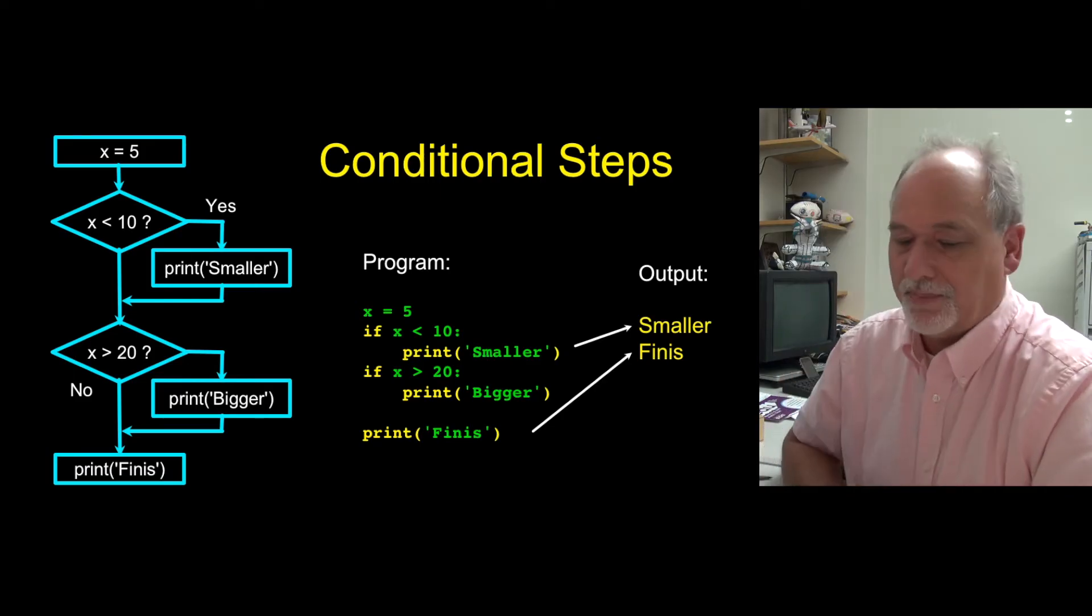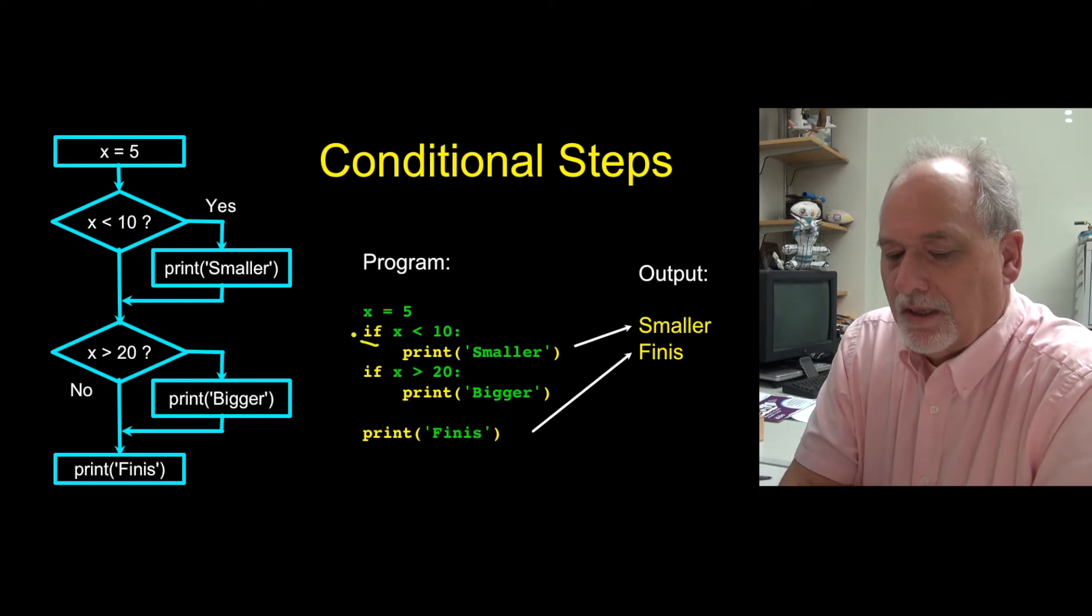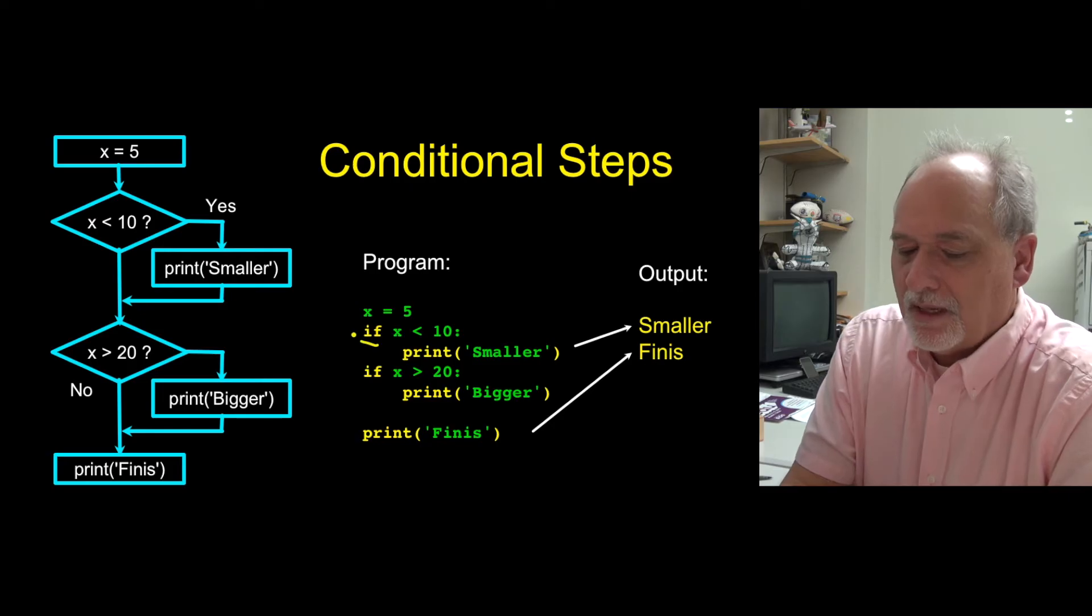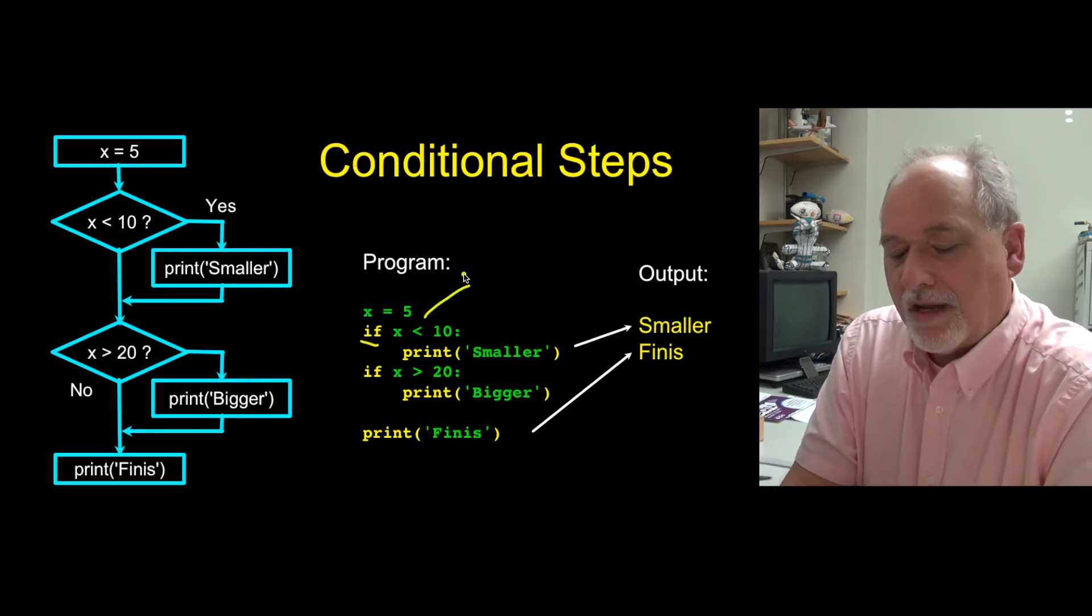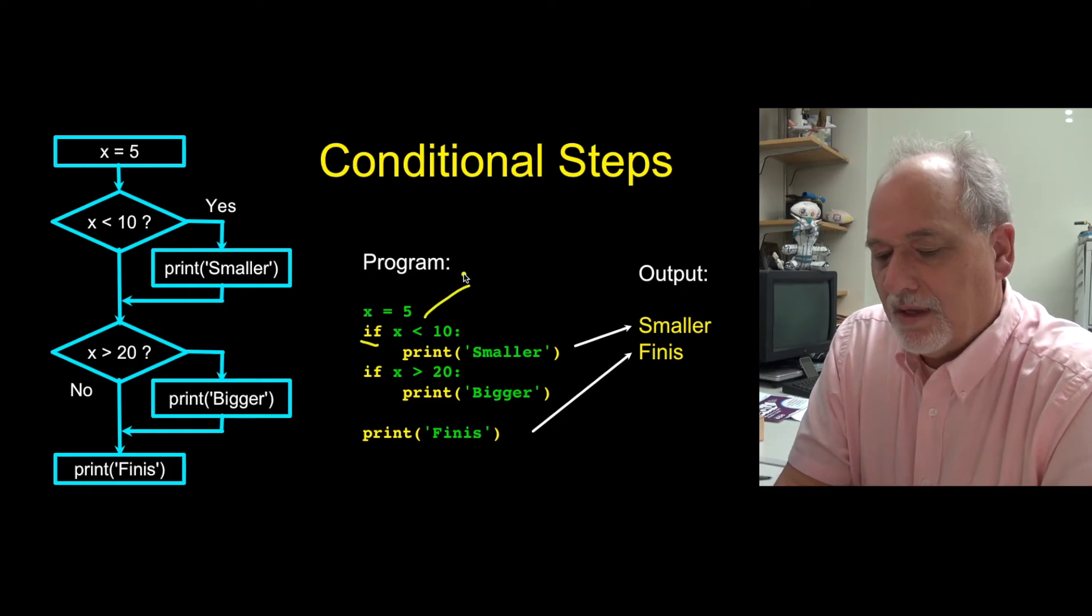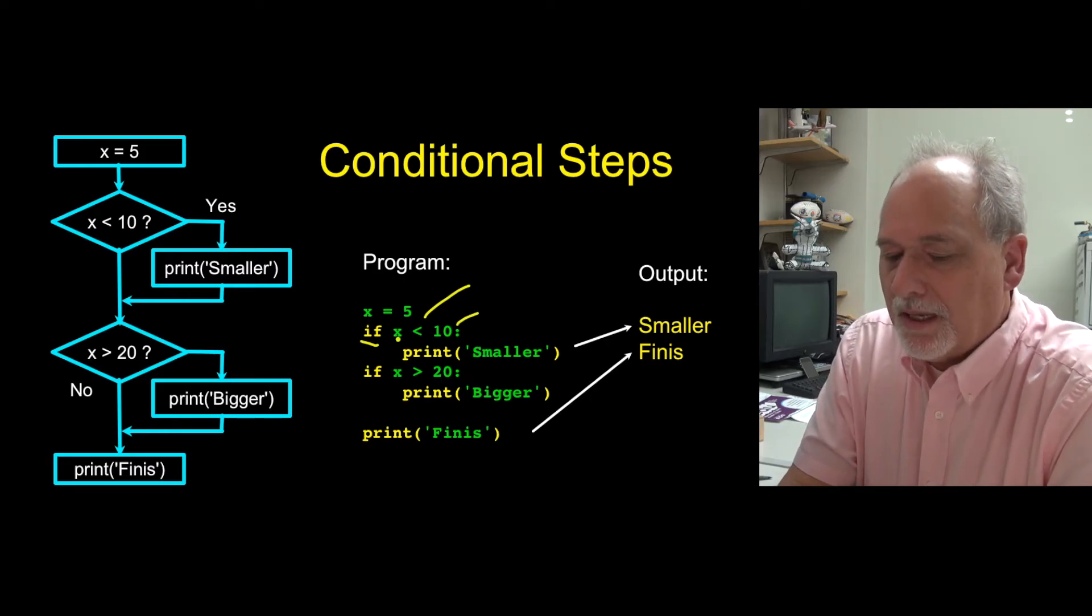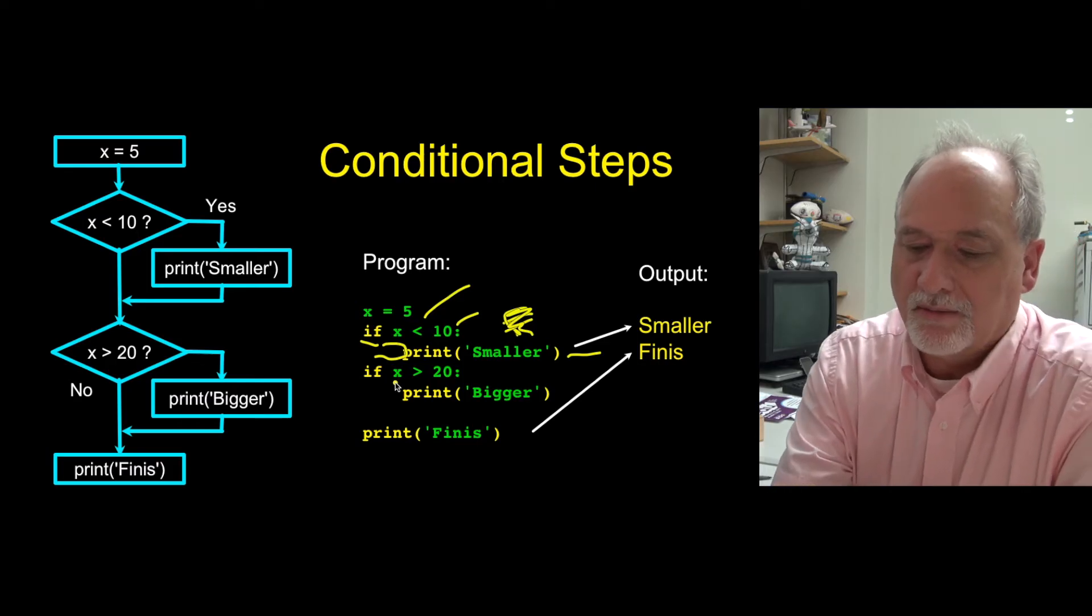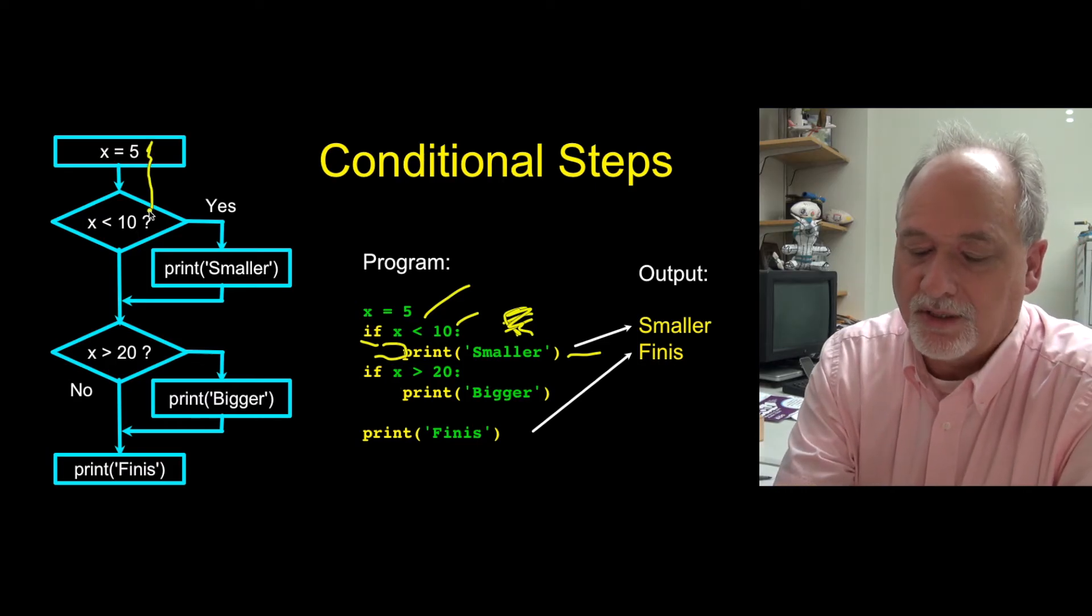Sequential code we just do some things, sometimes that's useful, but now we can have our code check something and then make a decision based on that thing. So the conditional steps in Python are pretty straightforward. The keyword that we're going to use is the if statement.